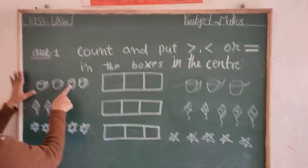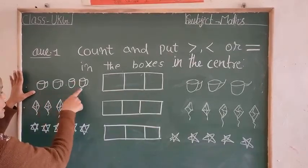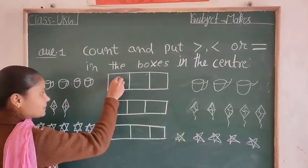One, two, three, four. How many objects are here? Four. So this is four.